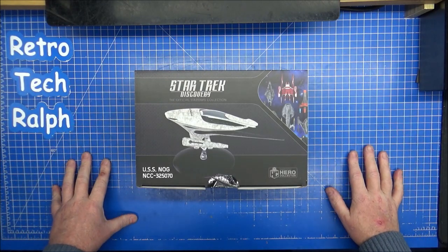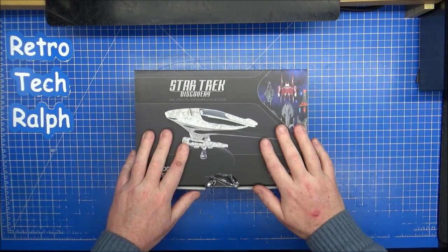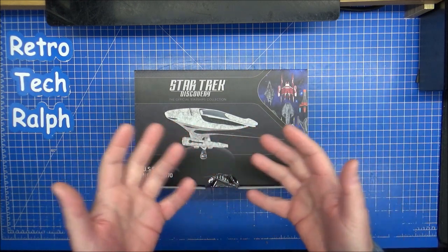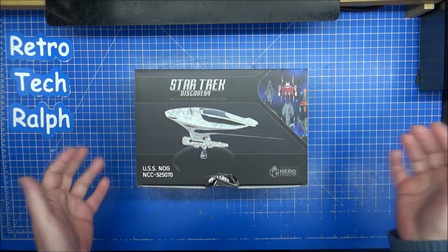We're back with an Eagle Moss model for all this time. This is number 14 from the Star Trek Universe collection. This is the USS Nog.